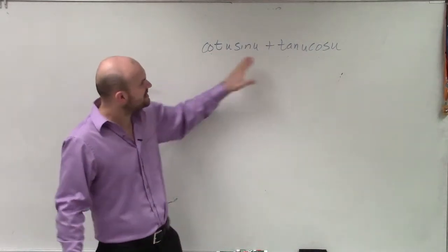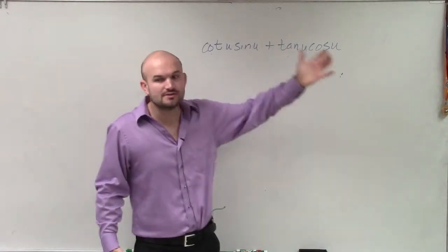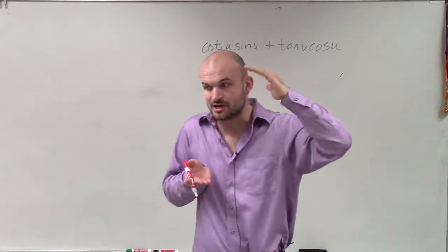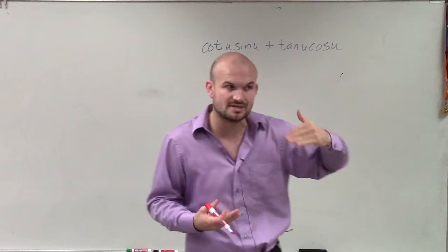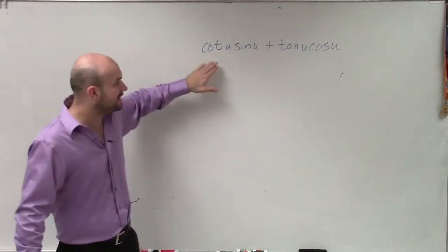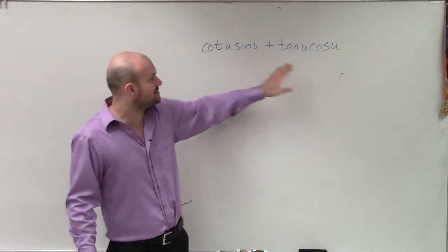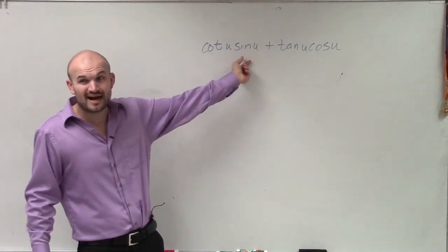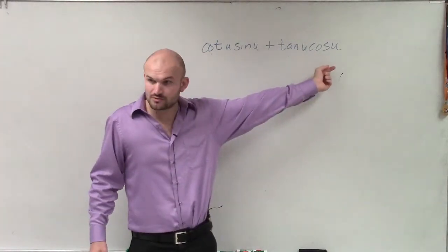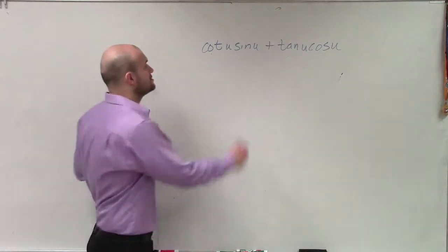So what's nice about cotangent and tangent is by using the quotient identity, you guys understand that those are sine over cosine or cosine over sine. So if I only convert my cotangent and my tangent, I notice that I could possibly divide out my sines and my cosines, which would simplify the expression. So let's go ahead and do that.